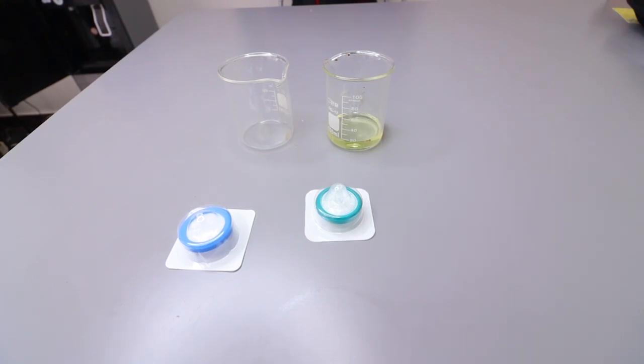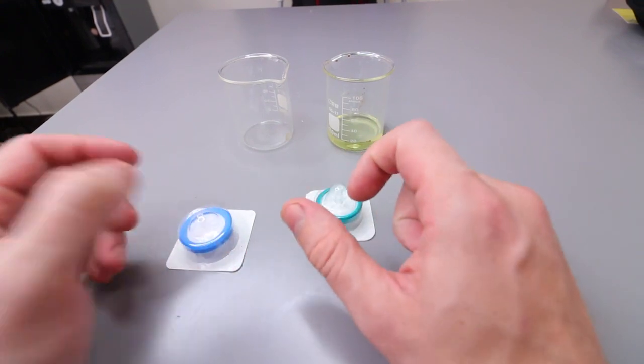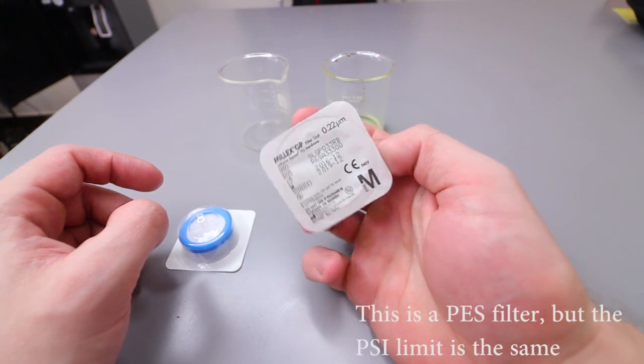All right, what is up internet. Quick video for me, I just want to talk about different filter types. Our filters that we sell are PVDF 0.22 micron filters and I want to talk about why we sell these.